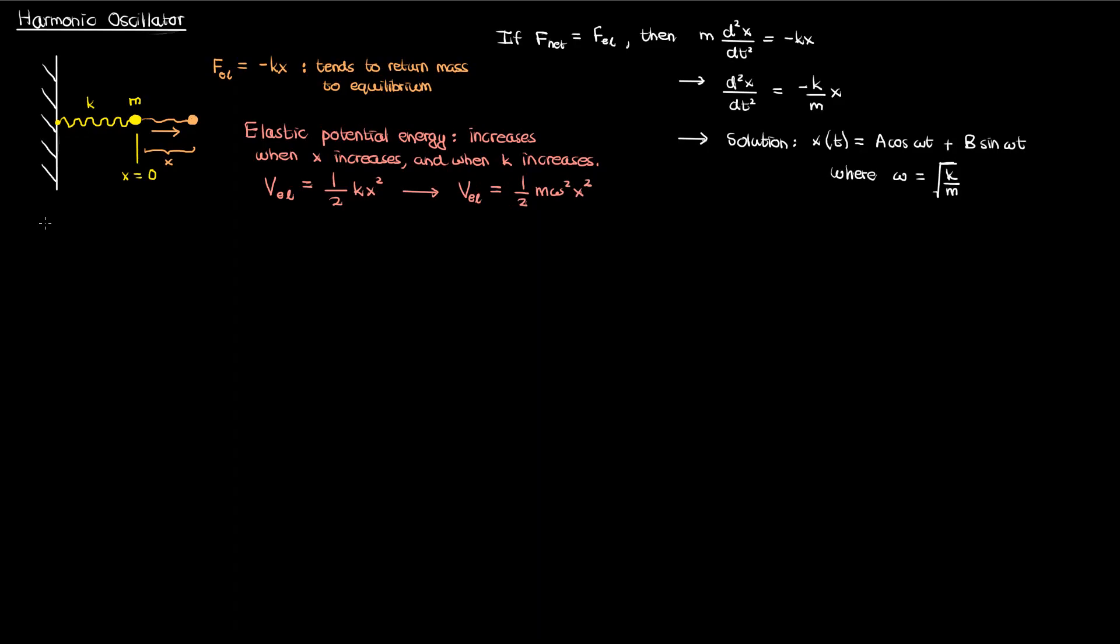The other motivation comes from the Taylor series expansion. If I have a generic potential function v of x which could represent anything then if v is a continuous differentiable and generally nice function I can expand v of x in a Taylor series around some point x0 which I'll make a local minimum of v of x.